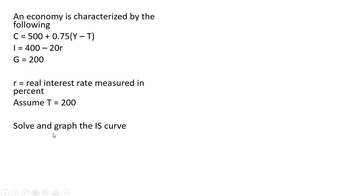So we're going to solve and graph the IS curve. The goods market equilibrium is characterized by the condition Y = C + I + G. We're going to substitute in our C, I, and G into this equation.